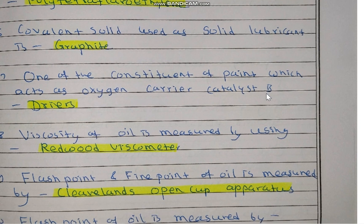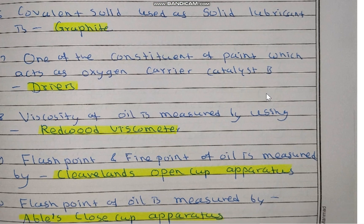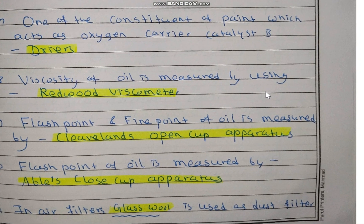The flash point and fire point of oil are measured by Cleveland's open cup apparatus. Only flash point is measured by Abel's close cup apparatus. In the next part we will see the next important questions. Thank you.